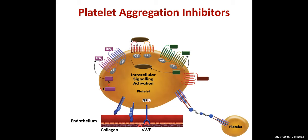These are G protein-coupled receptors. Thromboxane A2 activates GQ receptors — mostly GQ, one is GI. GQ increases calcium levels inside cells, which has further downstream effects. Thrombin has its receptor that activates platelets. There are two receptors known as P2Y1 and P2Y12 — P2Y12 is important because we have drugs that block it.